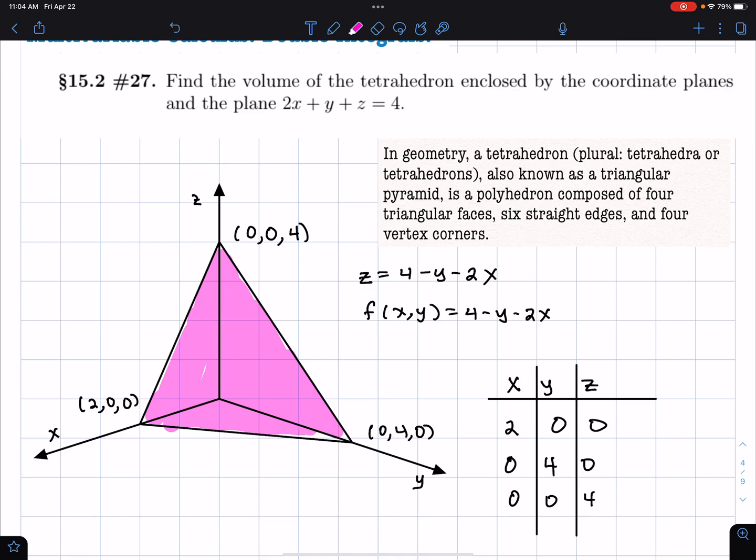This is a special type of tetrahedron because two of the faces are meeting at right angles with the third face. So that we can integrate this in a certain way where we have one function, this guy right here, f(x, y) equals 4 minus y minus 2x as the roof of our function. And then the floor of our solid is given by the function z equals 0.